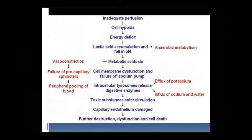Peripheral pooling of blood hota hai. Metabolic acidosis ki wajah se aur isi acidosis ki wajah se hamaari cell membrane dysfunctionate ho jaayegi, disrupt ho jaayegi, sodium-potassium pump fail ho jaayega. Intracellular lysosome release honge, digestive enzymes release honge - jis se ki potassium ka efflux hoga aur sodium aur water ka influx hona start ho jaayega. Toxic substances circulation mein chale jaate hain, endothelium - capillary ki jo endothelium hai wo damage ho jaati hai, aur zyada destruction, dysfunction hota hai aur cell death cause ho jaati hai.